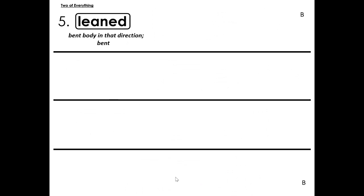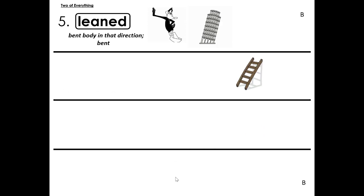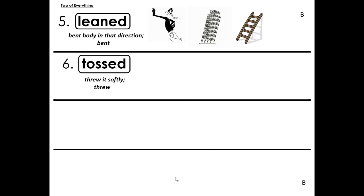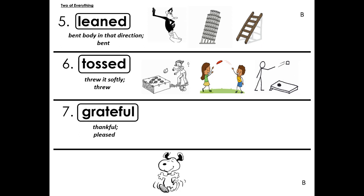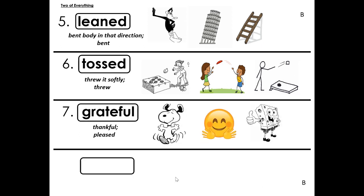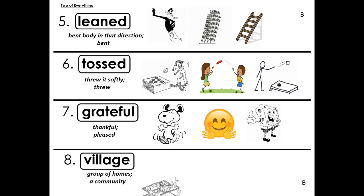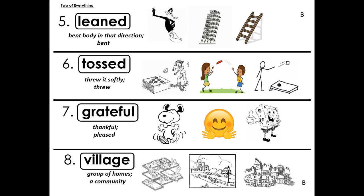Number five: leaned — bent body in that direction, bent. Number six: tossed — threw it softly, threw. Number seven: grateful — thankful and pleased. Number eight: village — group of homes, a community.